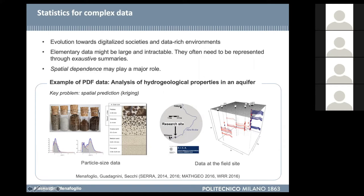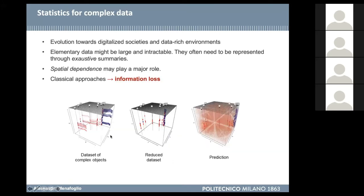This is just to give another example of simple data that might be summarized by more complex data. What you see in the slide are particle size data. The raw data — the beginning of the analysis — are the dimensions of particles found inside samples, which might be summarized in distributions. These are particle size distributions: exhaustive summaries that may present a spatial dependence.